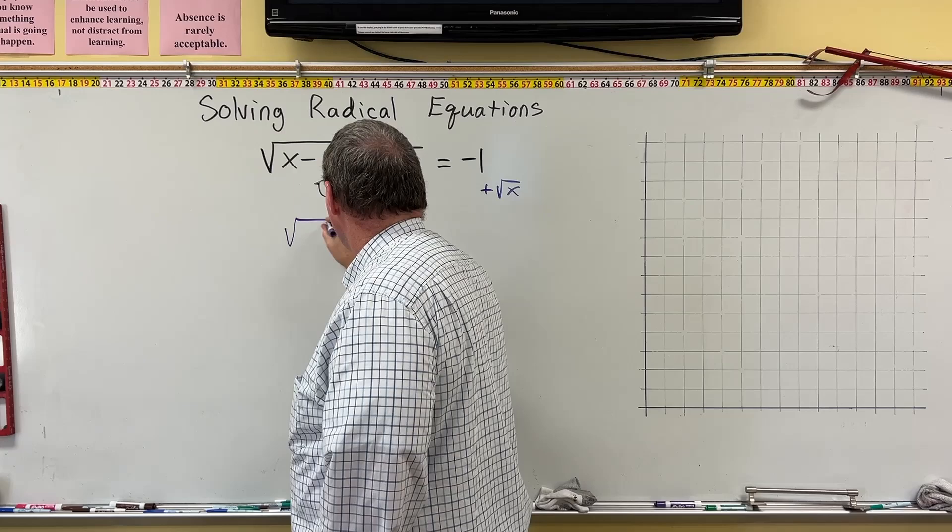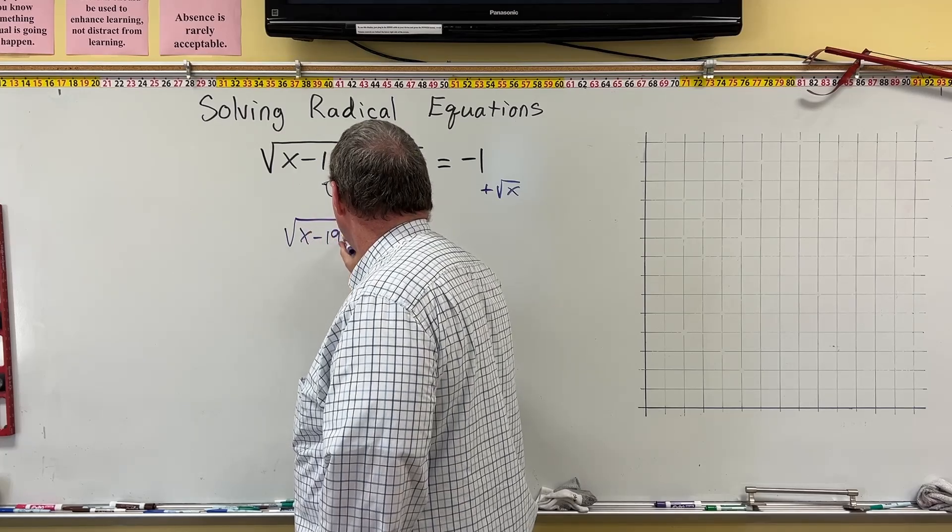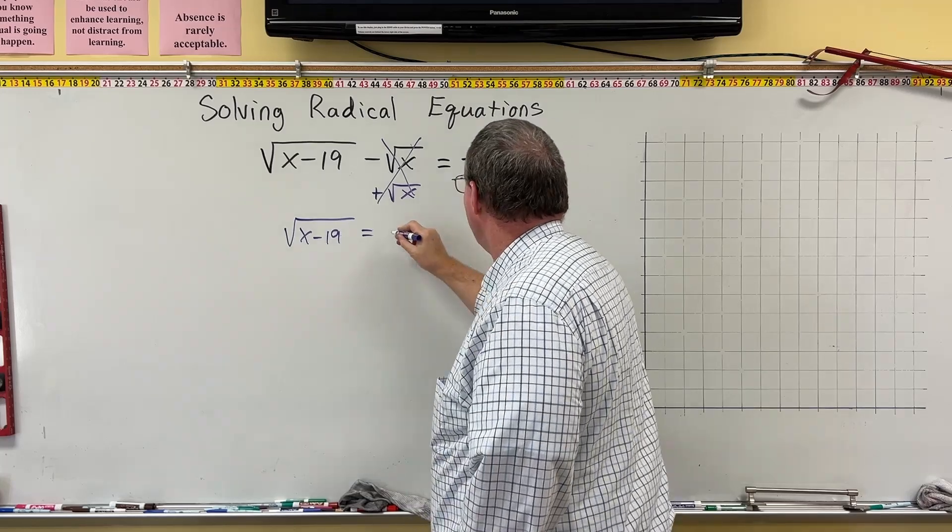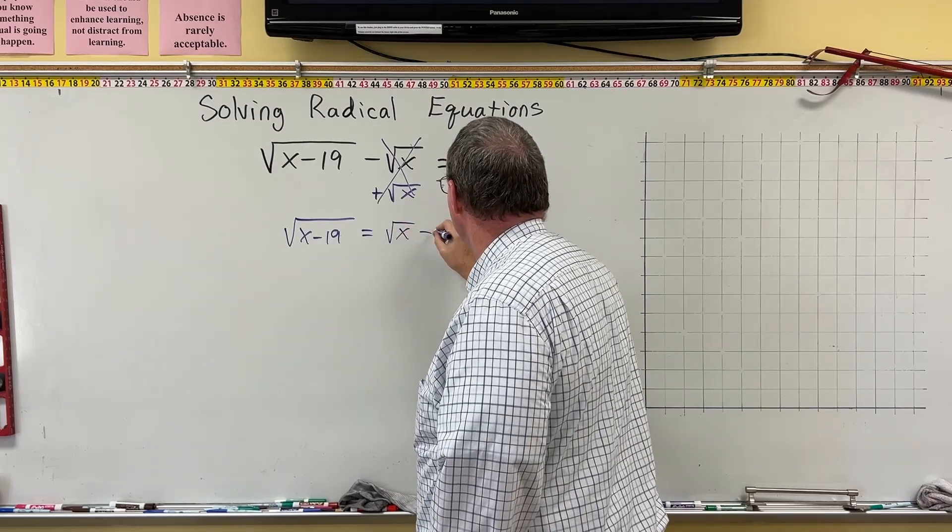So we're going to wind up with the square root of x minus 19 is equal to—because this is going to cancel right here—and then we're going to have the square root of x minus 1.